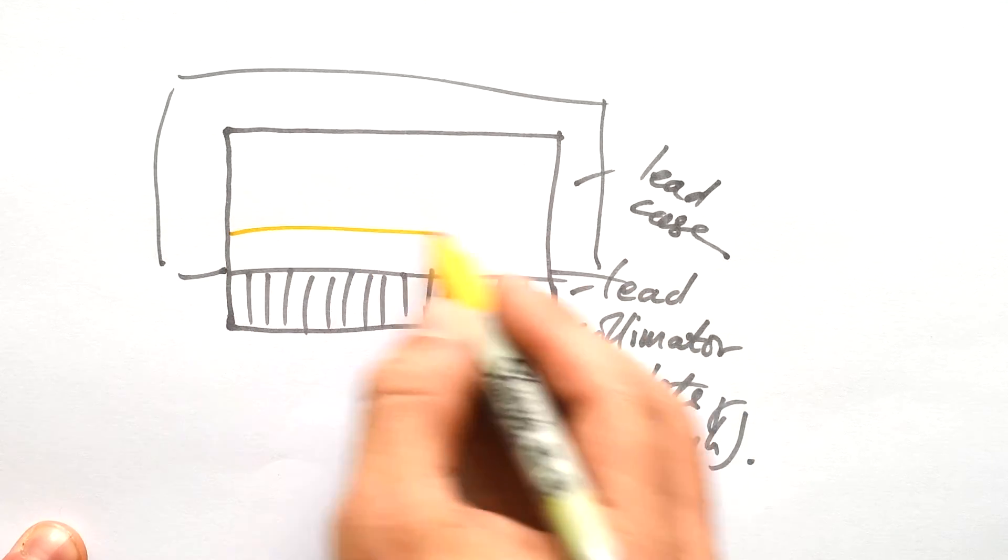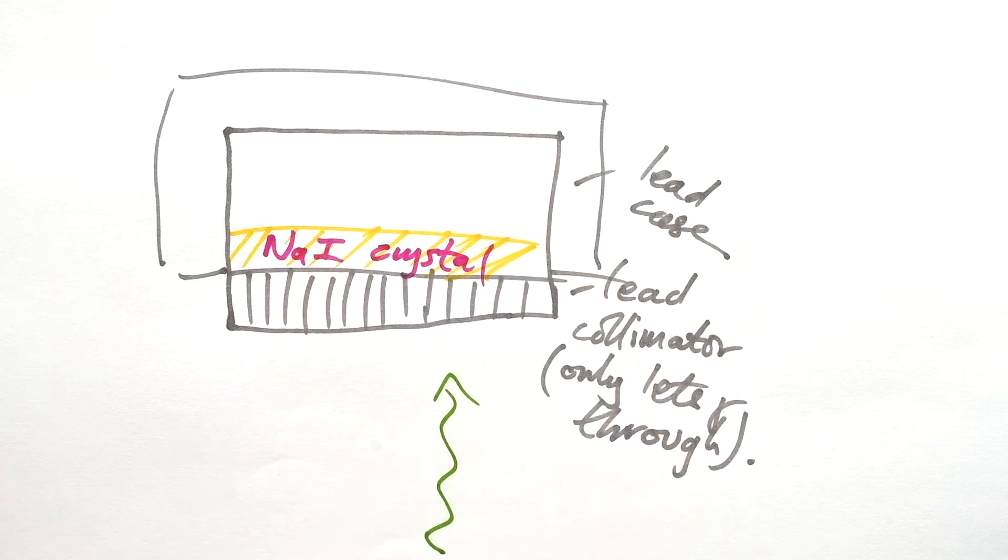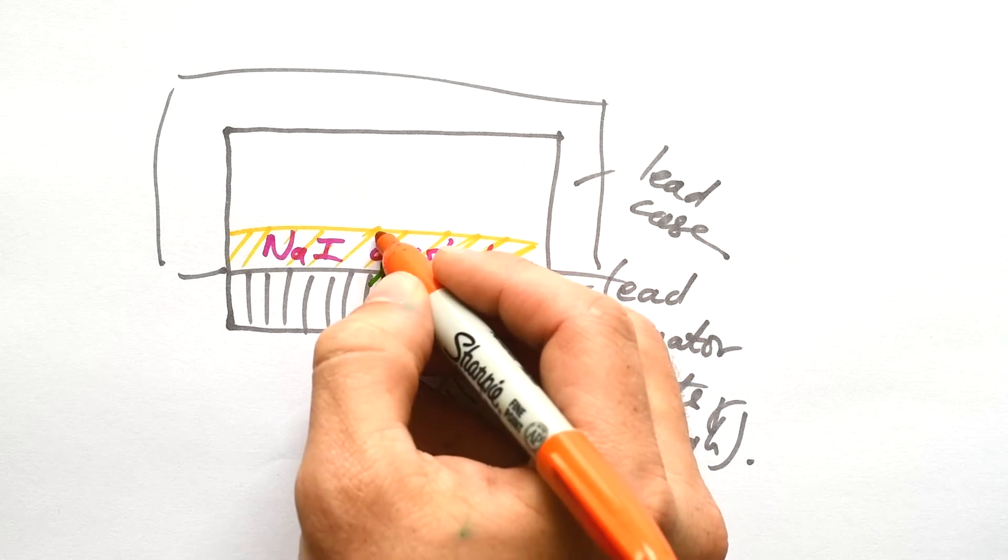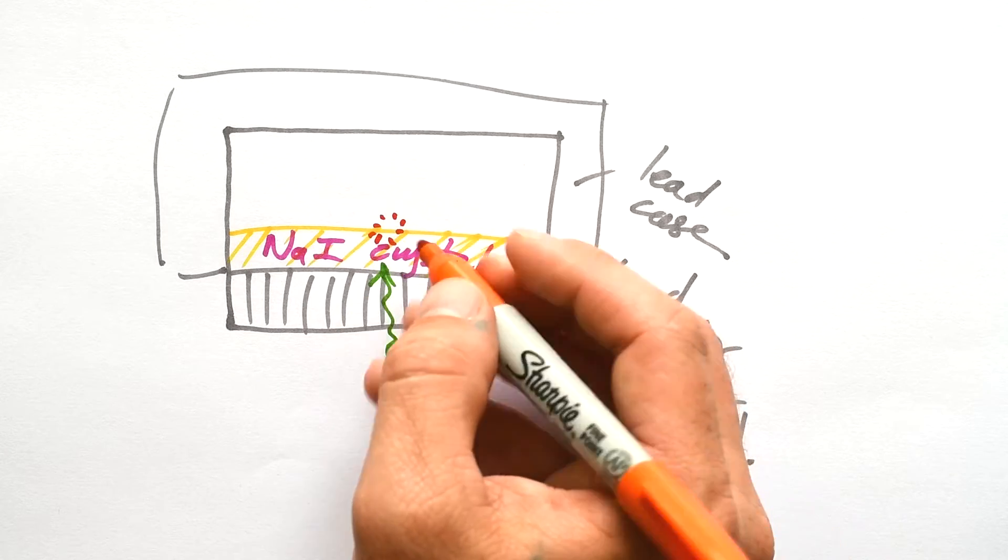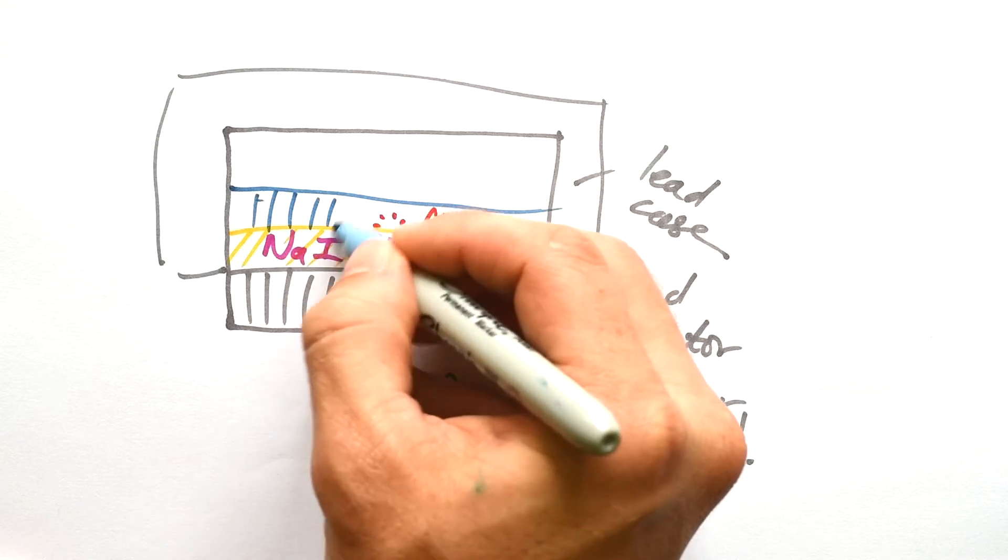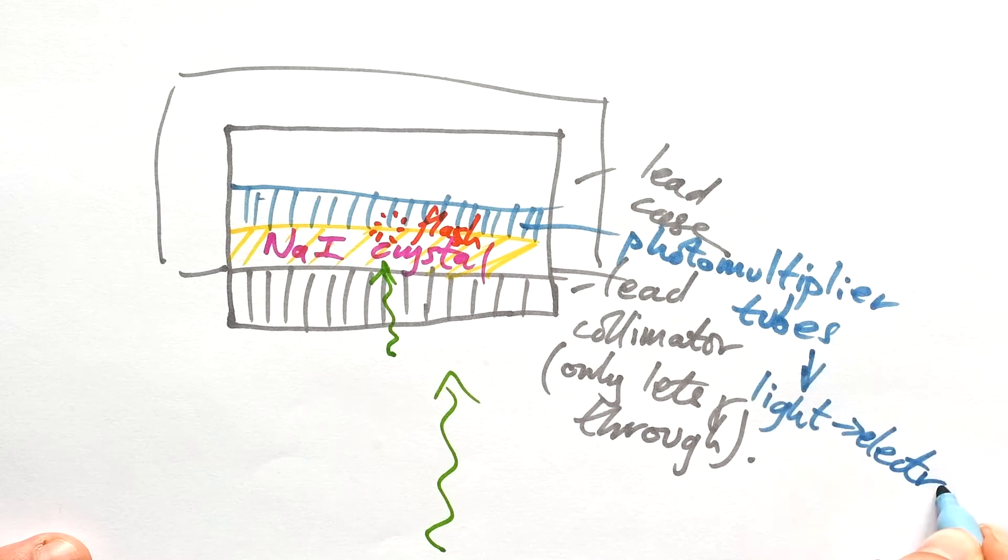Next thing we have is a crystal. That's a sodium iodide crystal. What happens is a gamma photon will go in and then that will turn it into visible photons. You'll have a little flash of light. Then what we have are photo multiplier tubes. They basically take light and convert it into energy for electrons. It's basically the photoelectric effect.